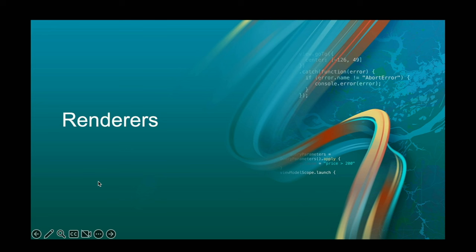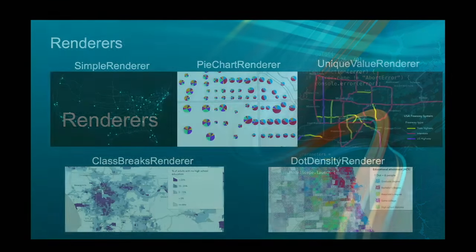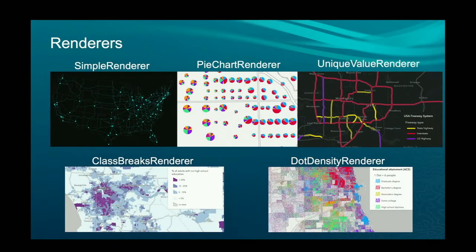So: symbols are a basic component of visualization, but we also have the concept of renderers. Renderers are where you get the real benefit of taking raw data and turning it into information you can actually use and make decisions with. Basically, a renderer allows you to tie a data attribute — like a field or an Arcade expression — to properties of symbols or colors, and then visualize that so you can see patterns. We have simple renderer — that just shows where things are — and for visualizing numbers, a class breaks renderer or a visual variable, which classifies data into categories based on number ranges.